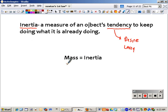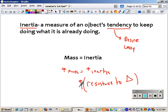Mass equals inertia. More mass equals more inertia. And we could also say resistance to change. More mass equals a bigger resistance to change. Less mass equals a smaller resistance to change.